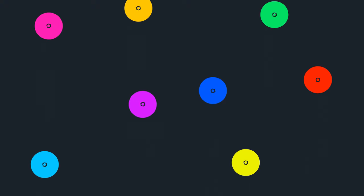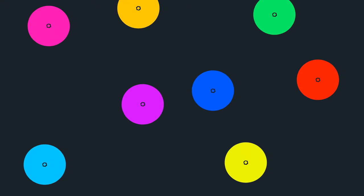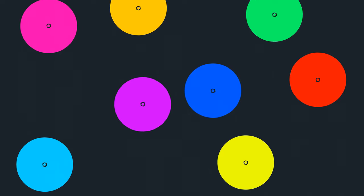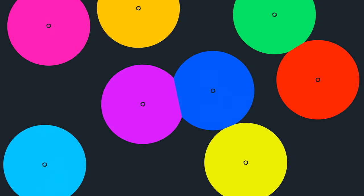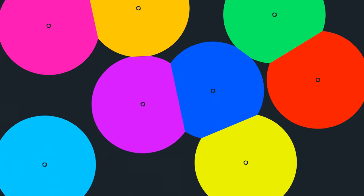There is another way that a Voronoi diagram can be created that will reveal why it is so common in nature. Imagine a set of points, but instead of a little agent like before, imagine that all these points are making paint at the same speed as each other. The paint will grow in a radial pattern, forming a perfect circle until it meets another color. At that boundary, it will stop growing there and continue to grow elsewhere.